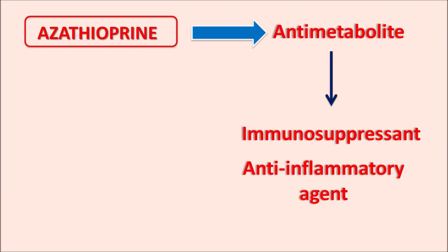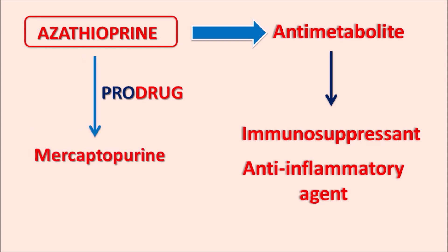Azathioprine is an inactive drug and is considered a prodrug. In vivo, azathioprine is converted into its active metabolite 6-mercaptopurine, which is mainly responsible for all the pharmacological activities of azathioprine. In this video we will discuss how azathioprine acts, its metabolic pathway, important precautions, drug interactions, side effects, and clinical uses.